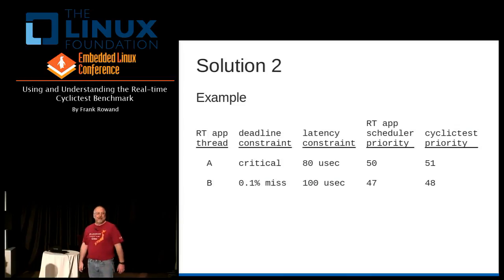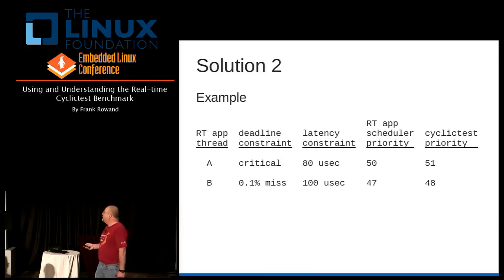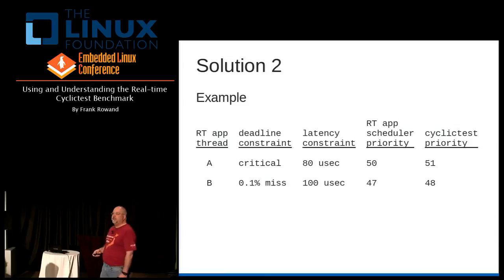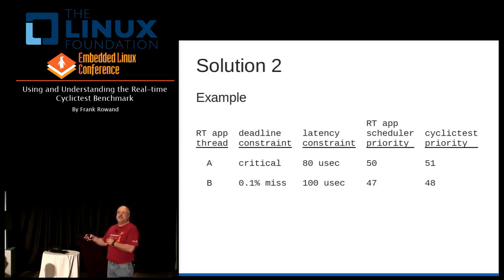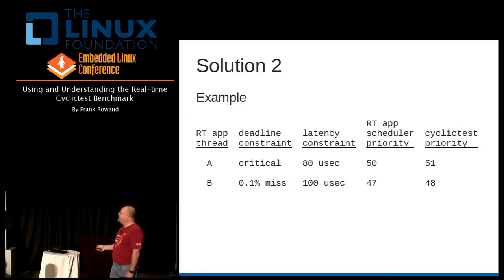Here's an example of what I was just saying. I might want to measure latencies for two different real-time threads in my application. In this example, I have one thread that's critical — it needs to be woken and running within 80 microseconds — and I've set its priority arbitrarily at 50. So to measure the latency for that thread, I'll just run cyclic test at one higher priority, at 51. Then I'll have a second real-time thread that can allow up to 0.1% of the time that it misses its deadline without catastrophe occurring, and it's running at a lower priority of 47. So if I want to measure its latency, I can just run cyclic tests at a priority of 48 — less than the critical real-time task but greater than the second one.